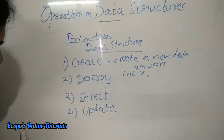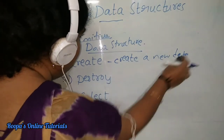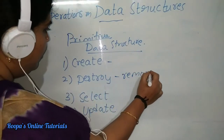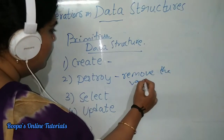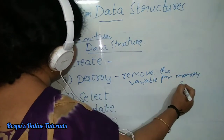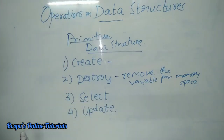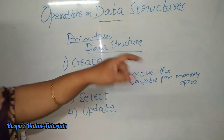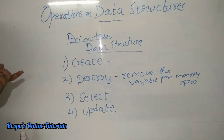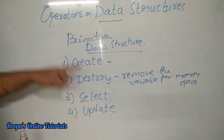The next one is destroy — to delete a data structure. Delete means to remove a variable from the memory. Destroy means to remove the variable from memory space. So when you want to remove the variable from the memory space, that is known as destroy. You can use the delete operator to remove an object from memory, and that is called destroy.